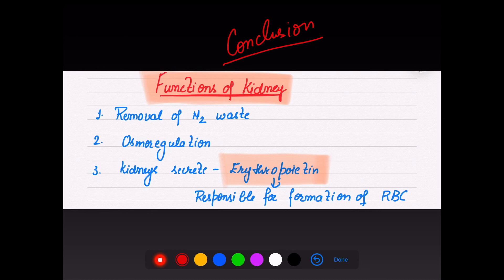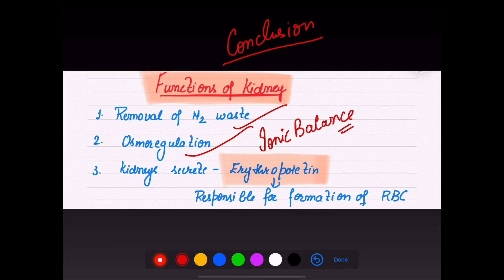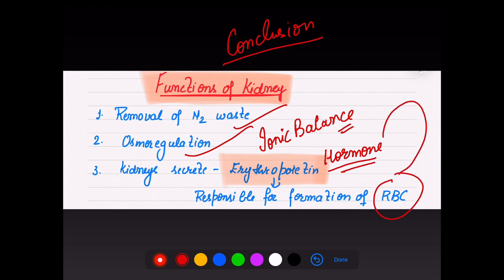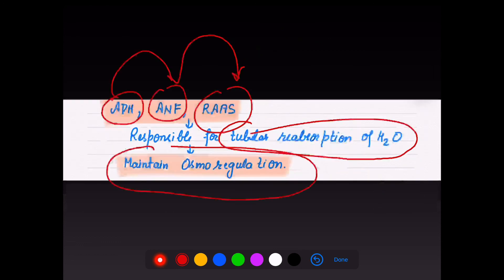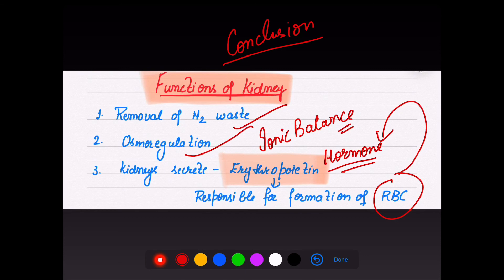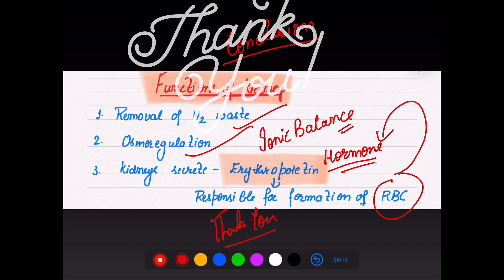In conclusion, the main functions of the kidney are: first, removal of nitrogenous waste (urea, uric acid) which maintains ionic balance, osmolarity, and osmoregulation. Second, the kidney releases a very important hormone — erythropoietin — which is responsible for formation of RBCs by erythropoietic tissue. We are only left with micturition and kidney disorders, which will be covered in the last lecture of the excretory system.